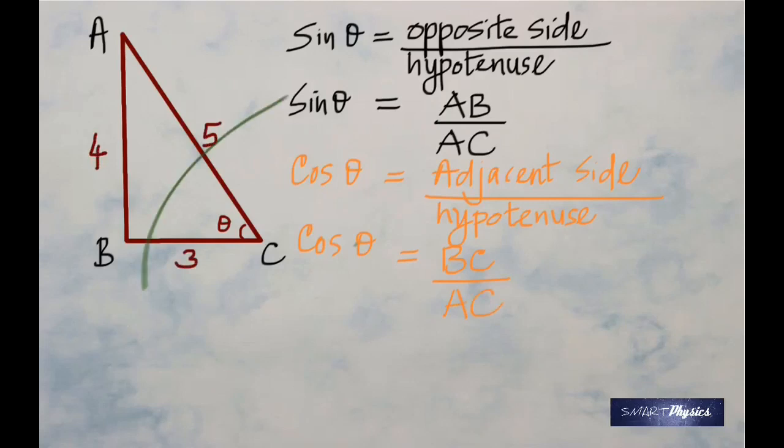Now let's assume that the sides of the triangle are 3, 4 and 5. From sin theta equals AB by AC, we get AB equals AC times sin theta, because AC goes to the other side and goes to the numerator. Similarly, BC is AC times cos theta.